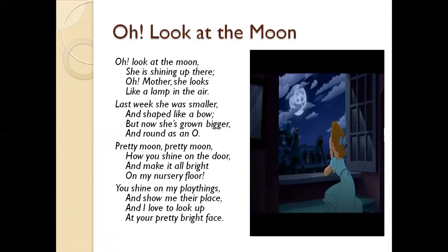She is telling that last week the moon was smaller and shaped like a bow, but now she has grown bigger and round as an O. The girl is saying that last week when she saw the moon it was smaller and in the shape of a bow, but now it has grown bigger and is in the shape of a round O — like the alphabet O.